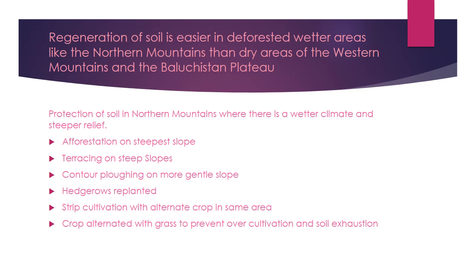On more gentle slopes, we need to follow the natural pattern of mountain elevation to grow more plants and forests. Hedge growth should be replanted — hedge growths are borders of fields with shrubs or small plants which protect the soil. Strip cultivation with alternate crops in the same area, and crop alternation with grass, helps prevent over-cultivation and soil exile.